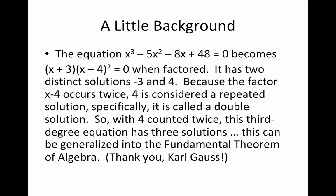Now for section 5.7. The equation x³ - 5x² - 8x + 48 = 0 factors as (x + 3)(x - 4)² = 0. It has two distinct solutions: negative 3 and 4. Because x - 4 occurs twice (it's squared), 4 is considered a repeated solution — specifically a double solution, counted twice. So this third-degree polynomial has three solutions total.